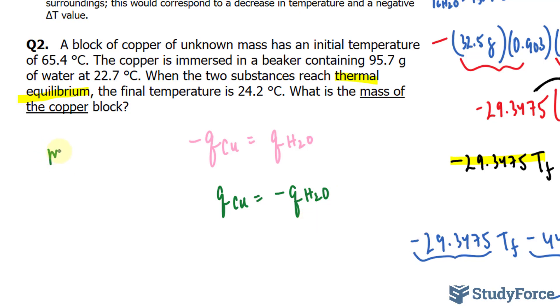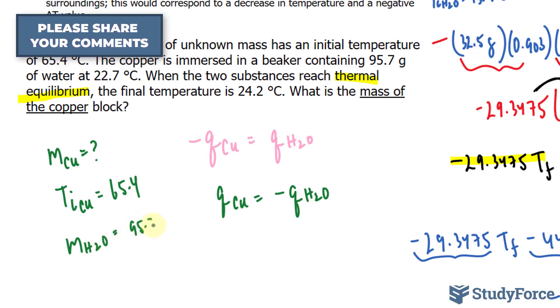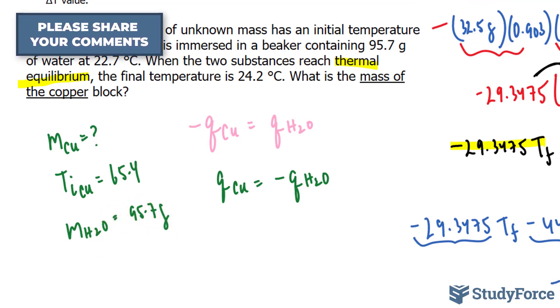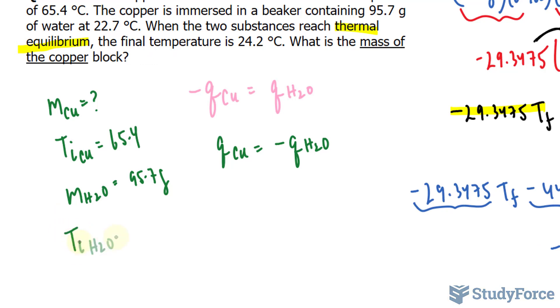We're not told the mass of copper, and that's what we're looking for. So I'll put M sub Cu is equal to question mark. The initial temperature of the copper, which I'll represent as T sub I Cu is equal to 65.4. The mass of water is 95.7 grams and it has an initial temperature of 22.7 degrees Celsius. The final temperature is 24.2 degrees Celsius.